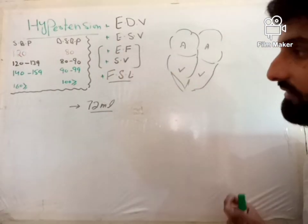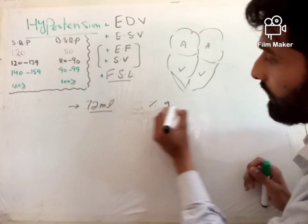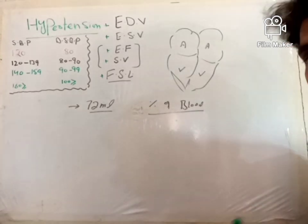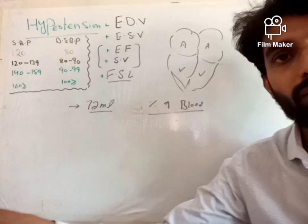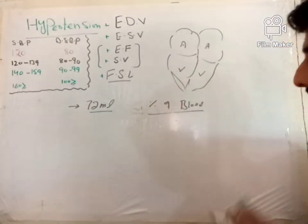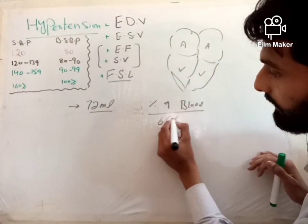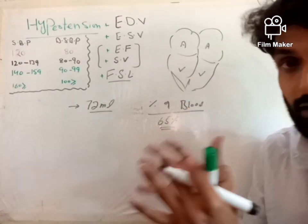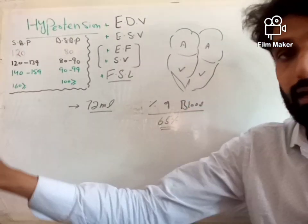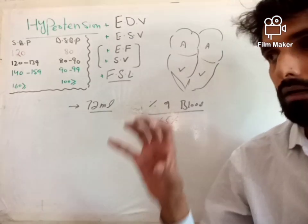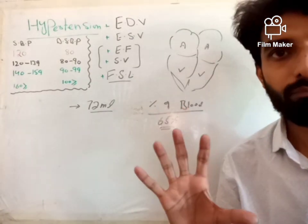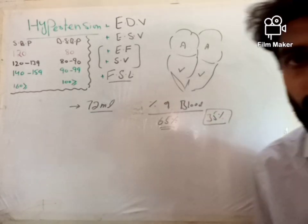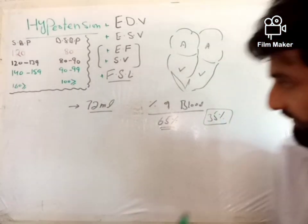Ejection fraction is basically the percentage of blood that has been pumped into the blood vessels per contraction. It is approximately 60–65% of the blood present in the ventricle that is ejected into the blood vessels per contraction. The remaining 35% of the blood stays in the ventricle.